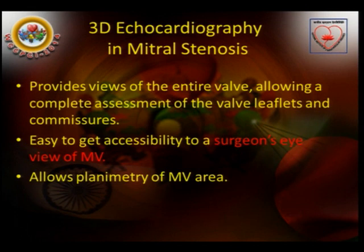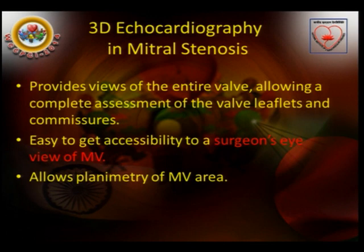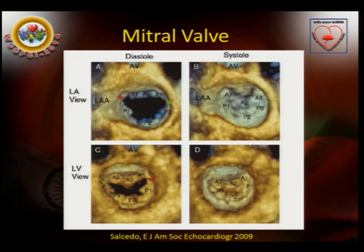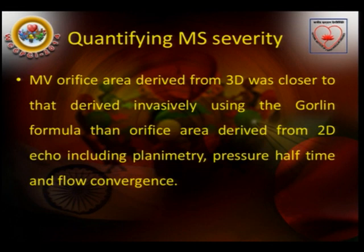In 3D echocardiography, this provides views of the entire valve, allowing complete assessment of the valve leaflets and commissures, and easy accessibility with a surgeon's-eye view of the mitral valve. It allows planimetry of the mitral valve area more easily and accurately. We can view the mitral valve complex from the left atrial as well as the left ventricular side, and in both diastole and systole. The scallops of both the anterior and posterior leaflets are seen very easily. The mitral valve orifice area derived from 3D is closer to that derived invasively using the Gorlin formula than the orifice derived from 2D echocardiography, including planimetry or pressure half-time.